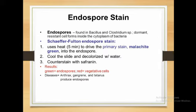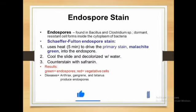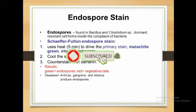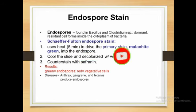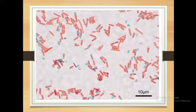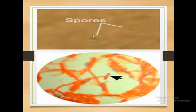The result of the endospore stain shows the endospores appearing green, and the vegetative cells appear pink. The endospores may have changes at their ends. This technique is observed under a microscope.